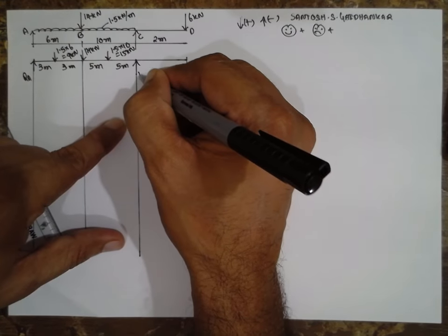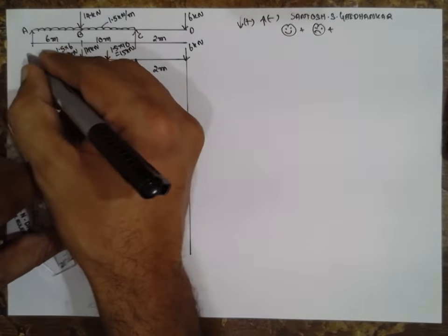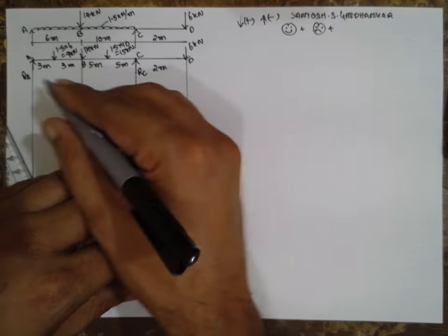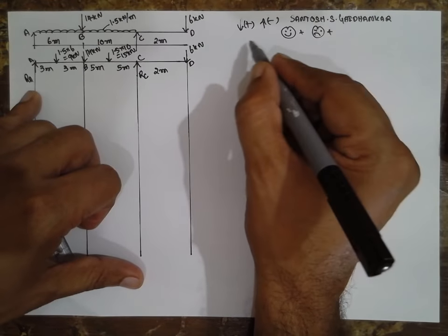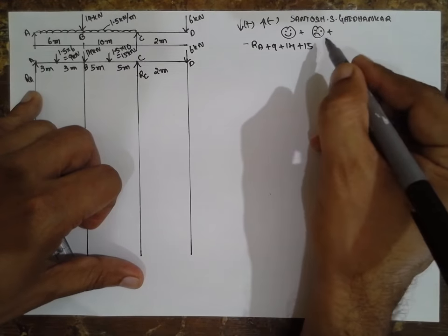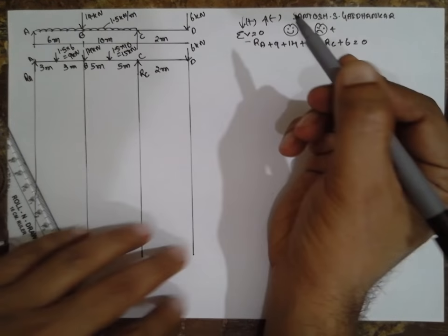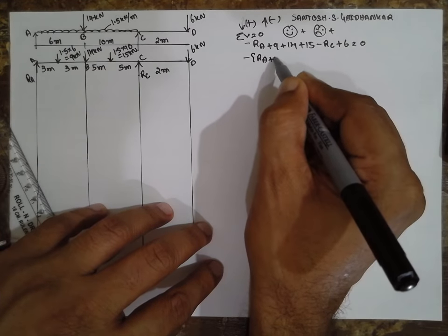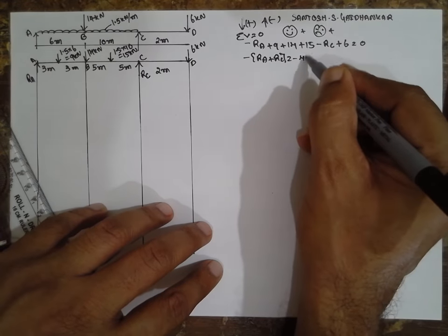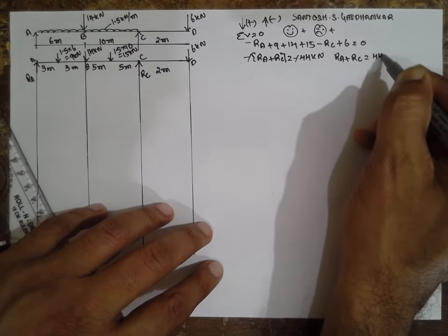Reaction RC acts at 2 meter with a point load of 6 kilonewton acting downward. The beam has points A, B, C, and D. Applying sum of vertical forces equal to zero: minus RA plus 9 plus 14 plus 15 minus RC plus 6 equals 0. Therefore RA plus RC equals 44 kilonewton. This is Equation 1.